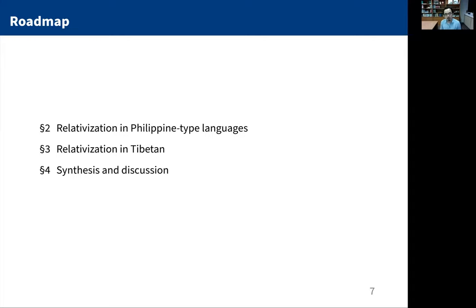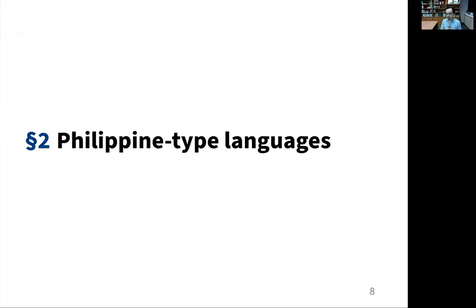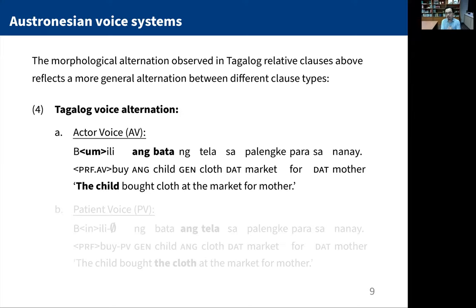We're going to start with the Philippine-type languages — some background on what this alternation looks like and how to think about it. Then in Section 3, for the bulk of today, we're going to be talking about Tibetan, based on my own original empirical work. And then we're going to bring these two things together at the end. The morphological alternation shown at the beginning with agent versus theme relatives is actually part of a much more general alternation between different clause types in Tagalog.